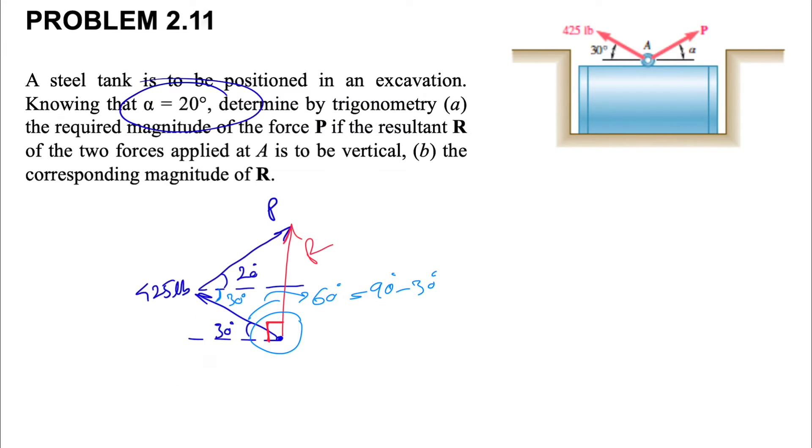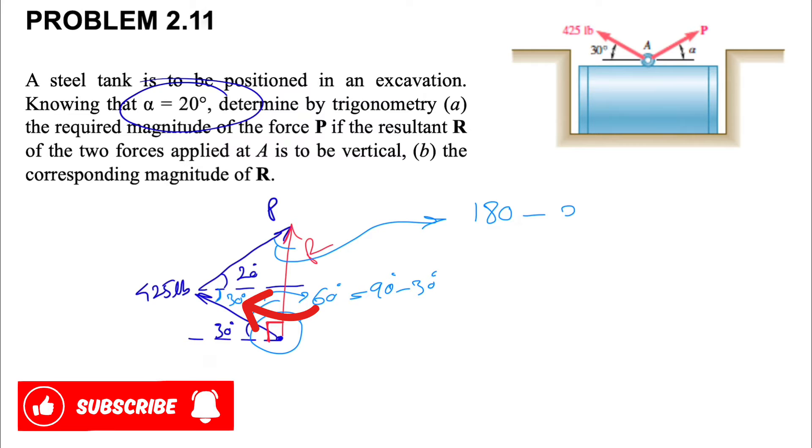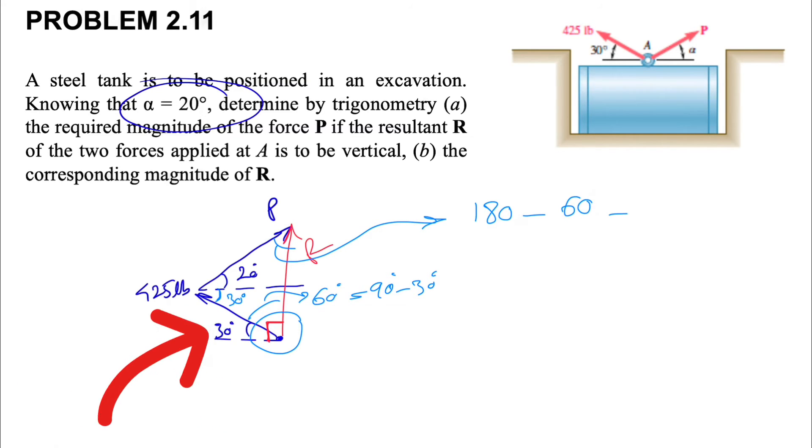We know this part will be 60 degrees, which is 90 minus 30 degrees. Also this angle here would be the same as the 30 degrees we have here. If we want to find this angle we...